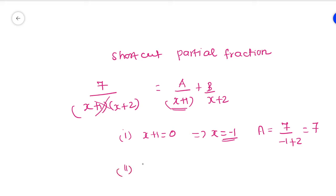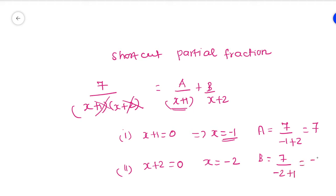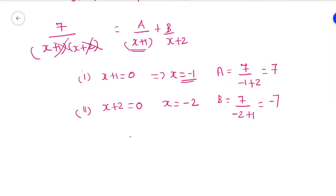Similarly, to find B, take the denominator of B: x+2 equals 0, giving x equals minus 2. Substitute into the left-hand side except the denominator of B — remove (x+2) and keep only (x+1). So B equals 7 divided by (minus 2 plus 1), which equals minus 7. The answer is 7/(x+1) minus 7/(x+2).